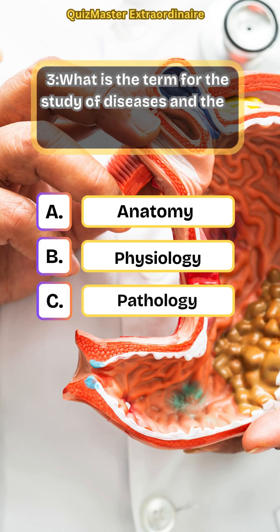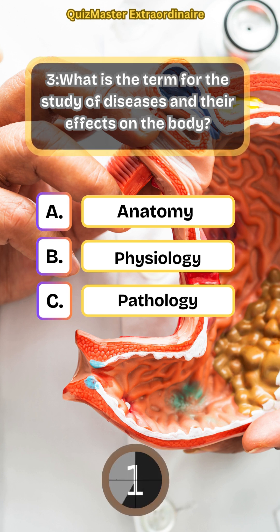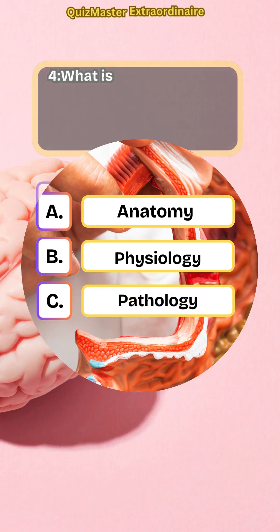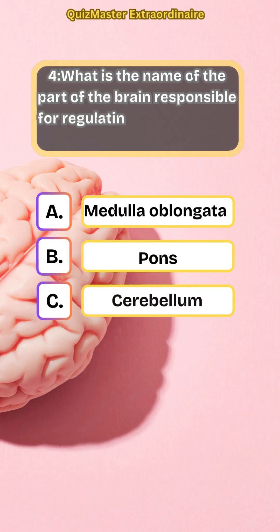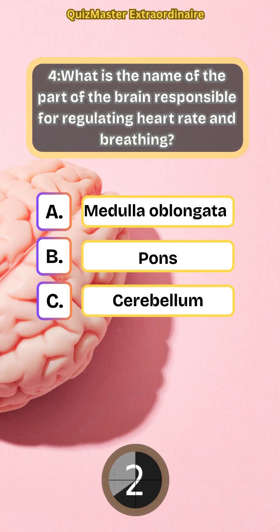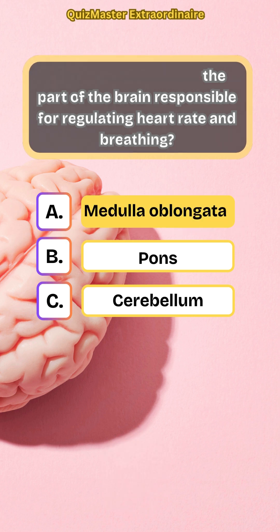What is the term for the study of diseases and their effects on the body? Pathology. What is the name of the part of the brain responsible for regulating heart rate and breathing? Medulla oblongata.